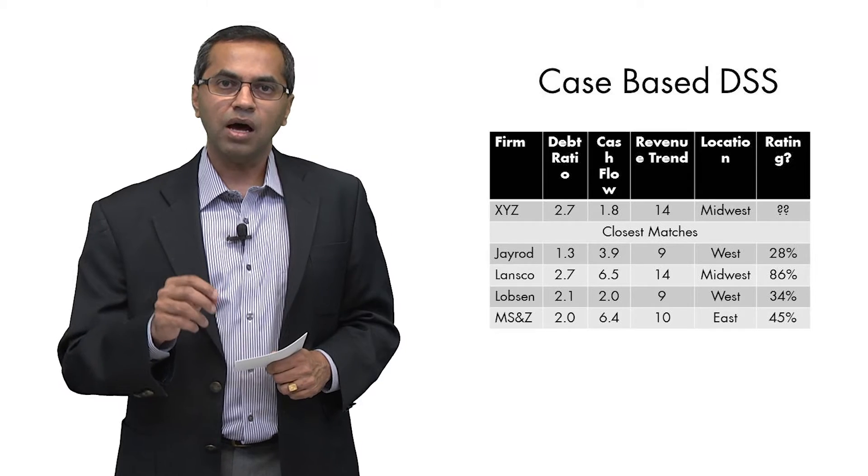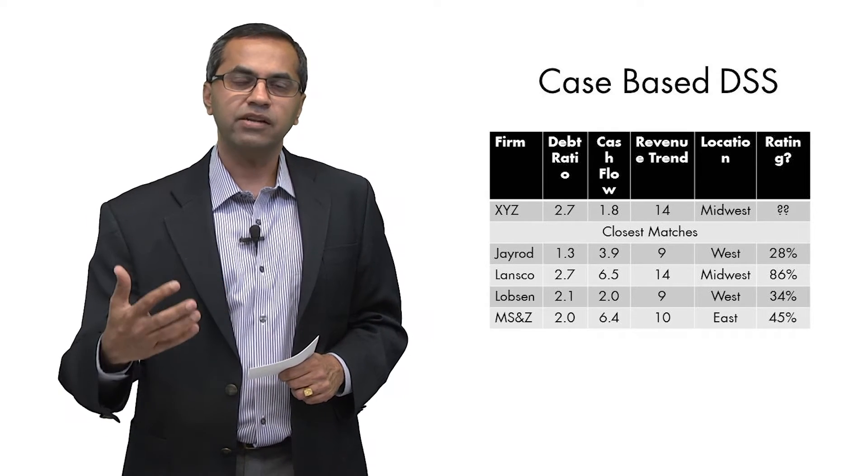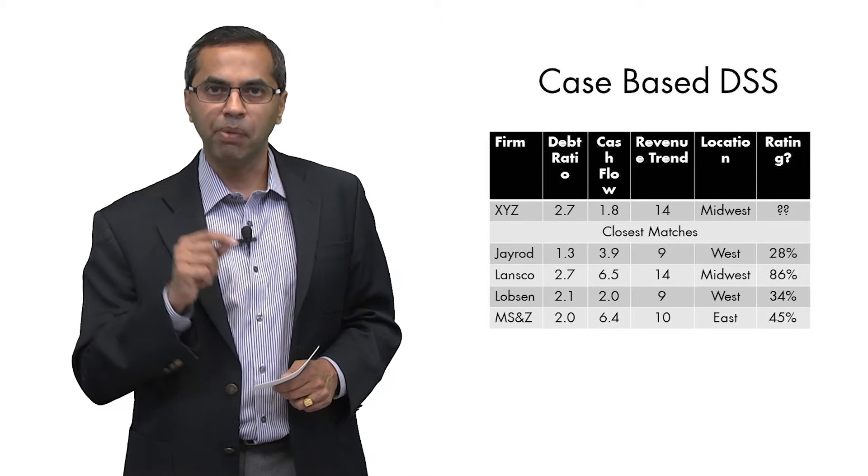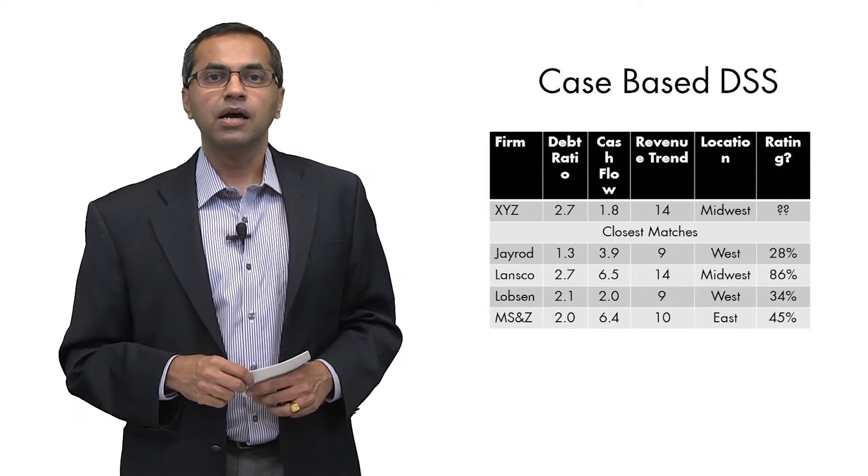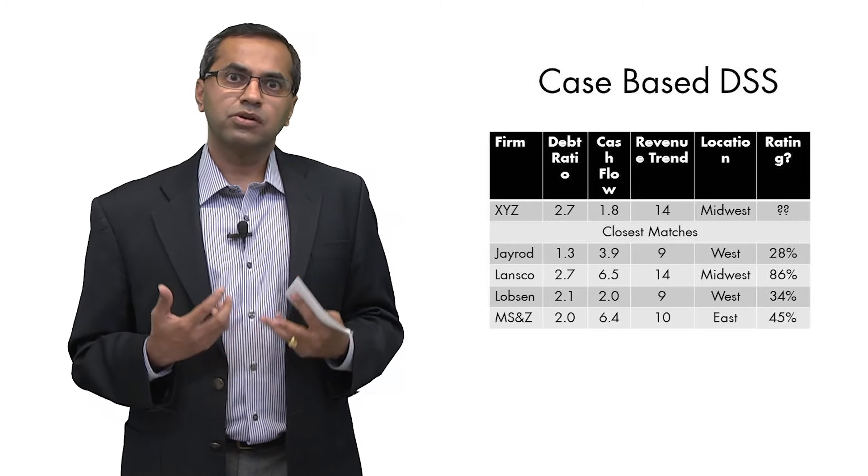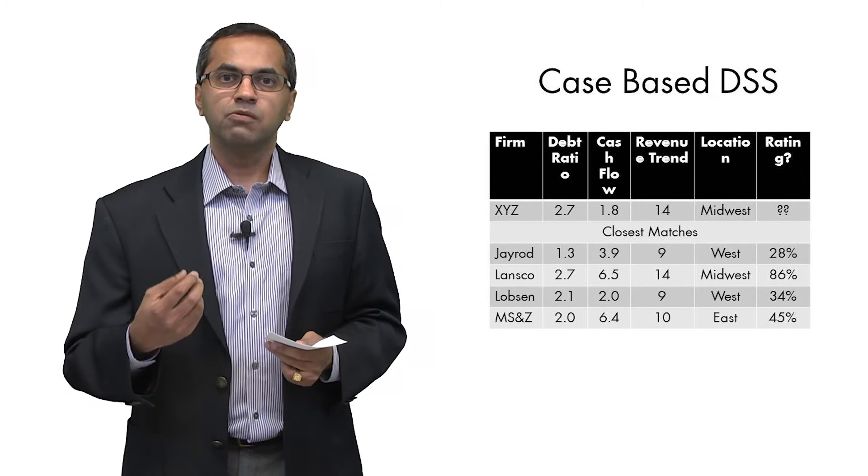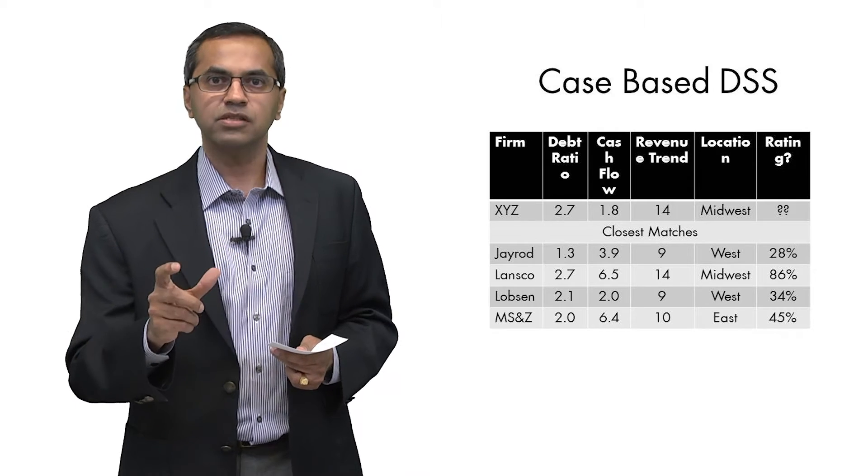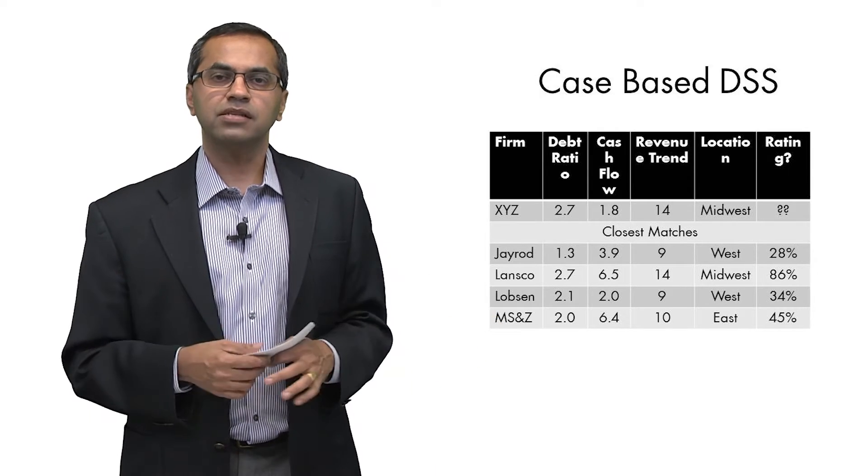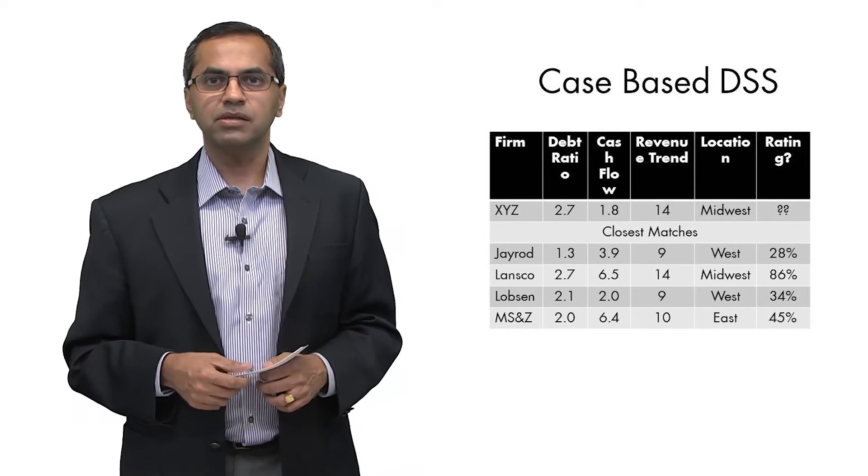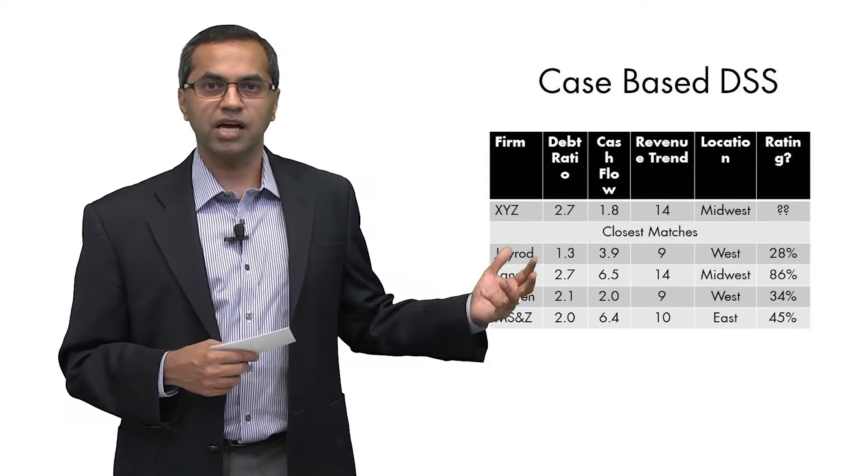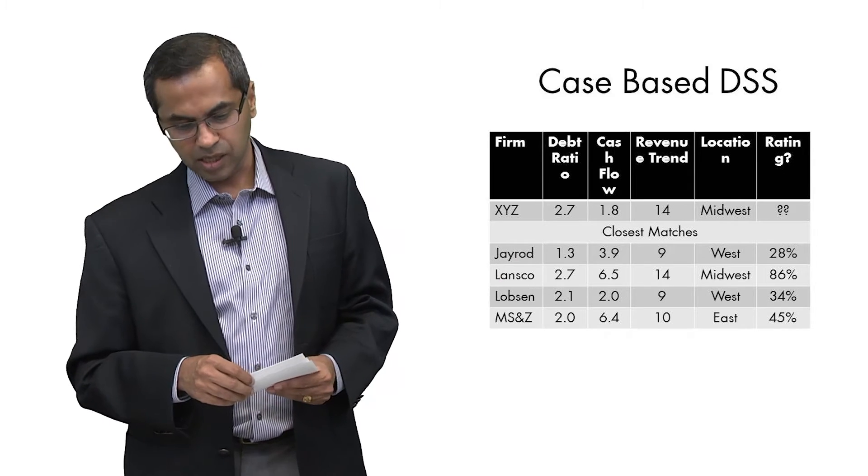What you can ask the computer to do is to identify a number of past cases where you already now have information about their credit rating. What the computer is going to do is follow a simple algorithm which is called the minimization of least squares or minimizing the Euclidean distance in the four-dimensional space between the new applicant and its existing database of cases. And it might pull out, for example, these three companies,